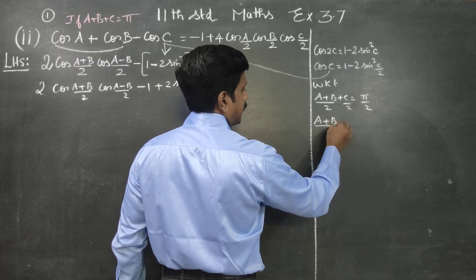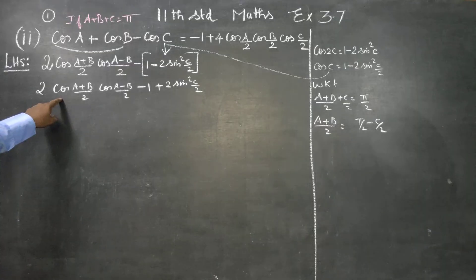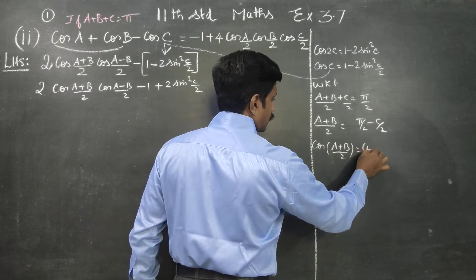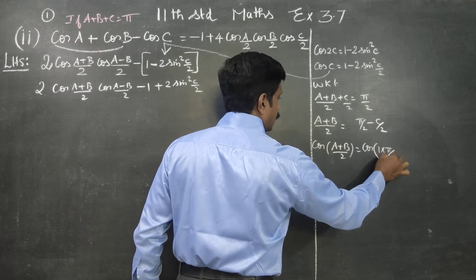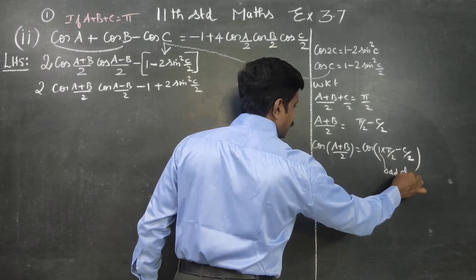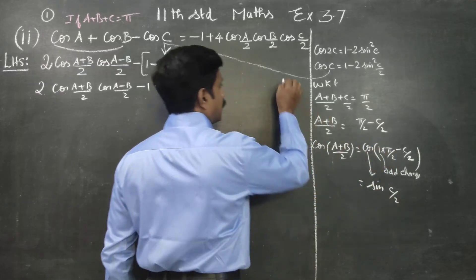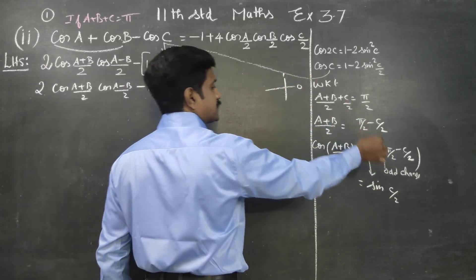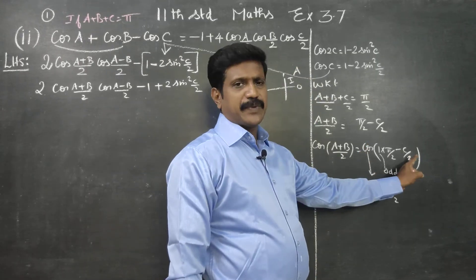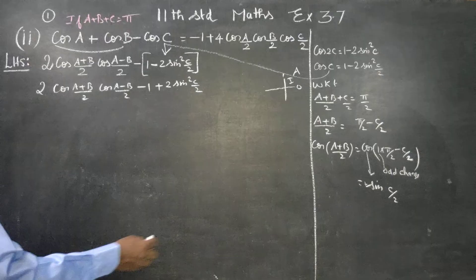A plus B by 2 is equal to π/2 minus C/2. And 2 sin²(C/2) — first, all are positive, therefore positive. Using the ready-made formula: cos(90° − θ) = sin θ. Therefore, we get plus sin(C/2).